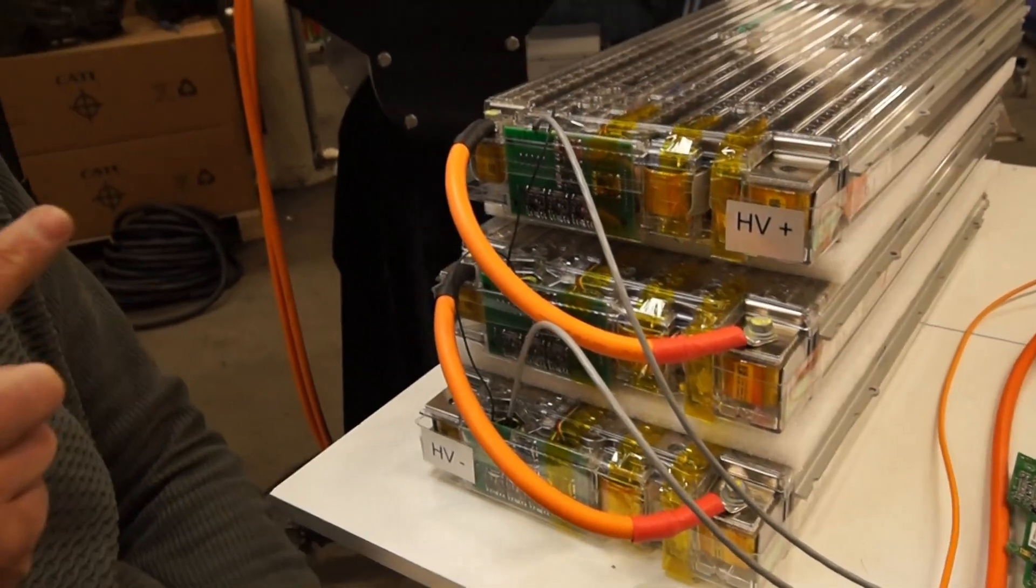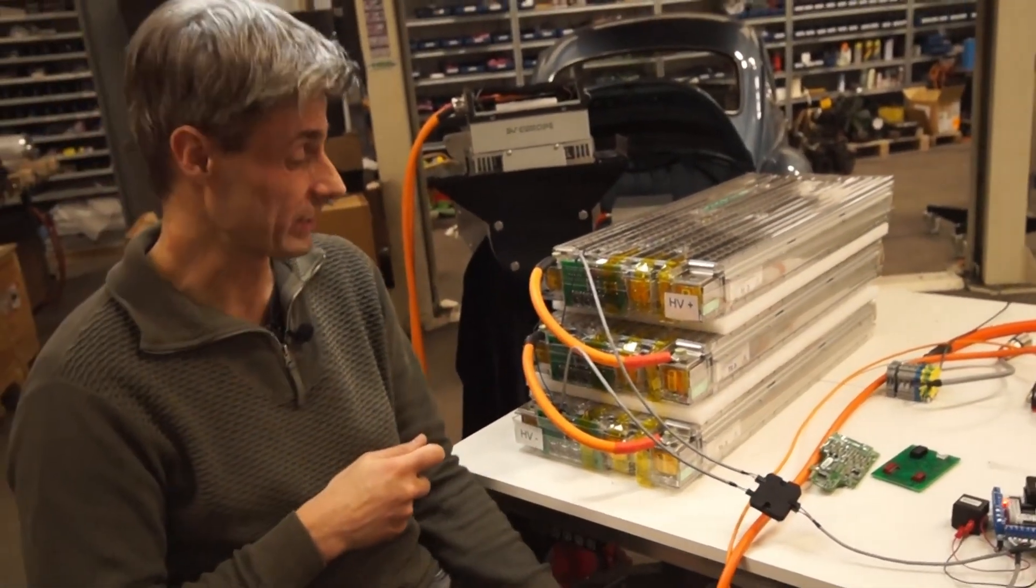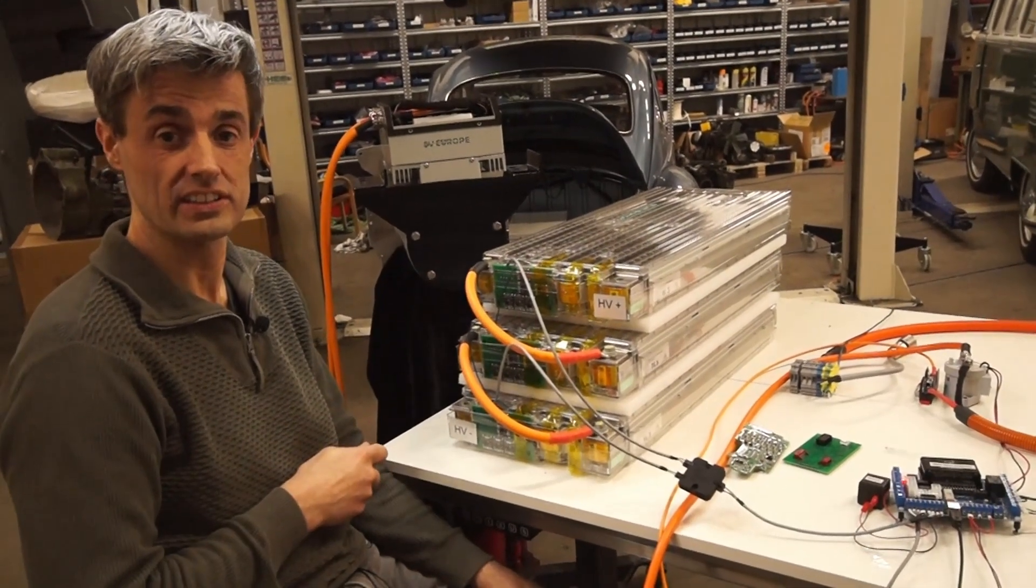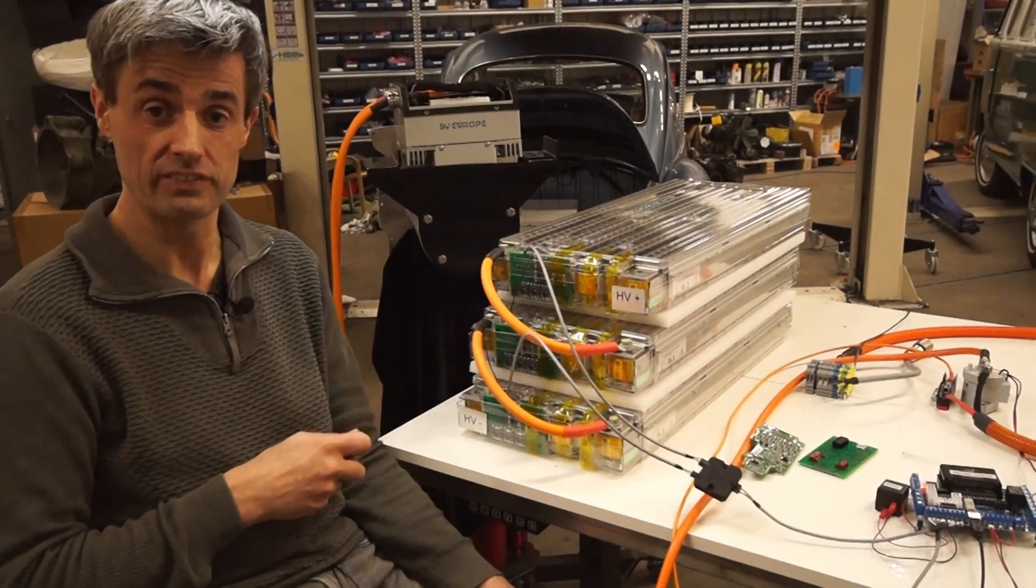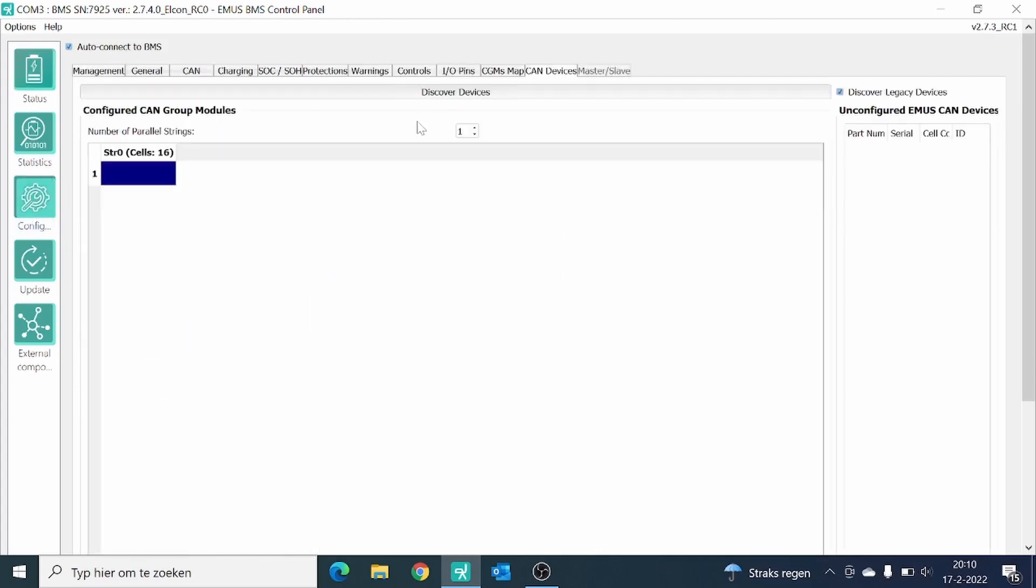Right now I'm going to show you how you set up the software, but I only show you the part of the CAN group module because the rest you've already seen in the BMS movie we made before. In part five of our instruction videos, we already showed you how to set up the BMS system, so this time we will only show you the specific settings you need to do for the Tesla batteries. First I will set up the CAN group system. You go to configuration and then to the CAN devices. You mark the discover legacy device mark and then you push the discover devices button. Click on OK on this message and then the system will start searching the CAN devices in your CAN group.